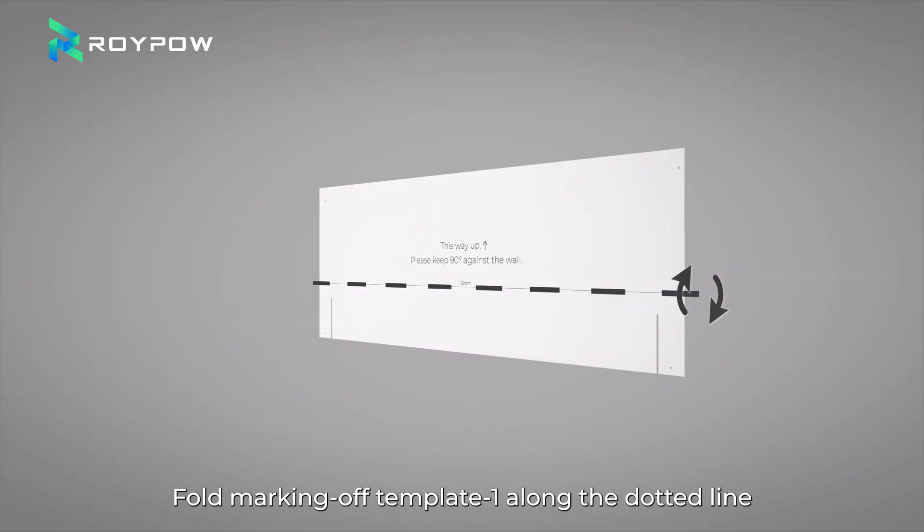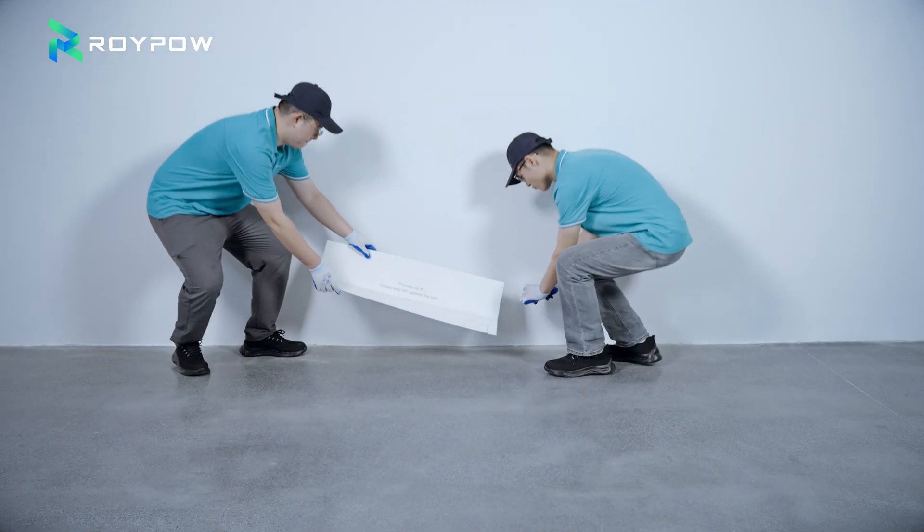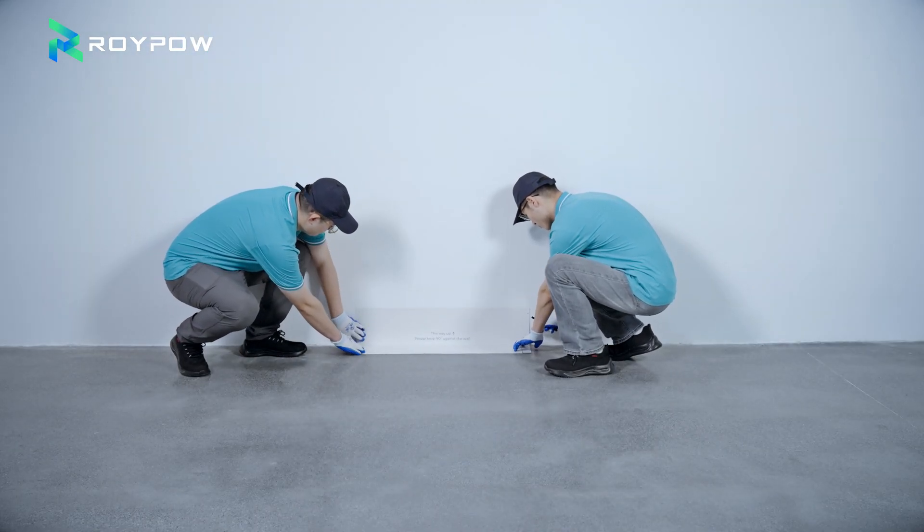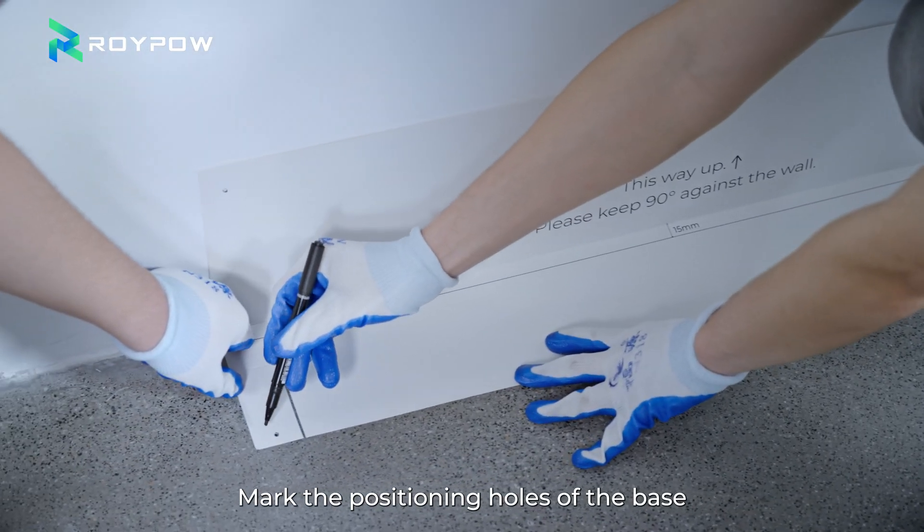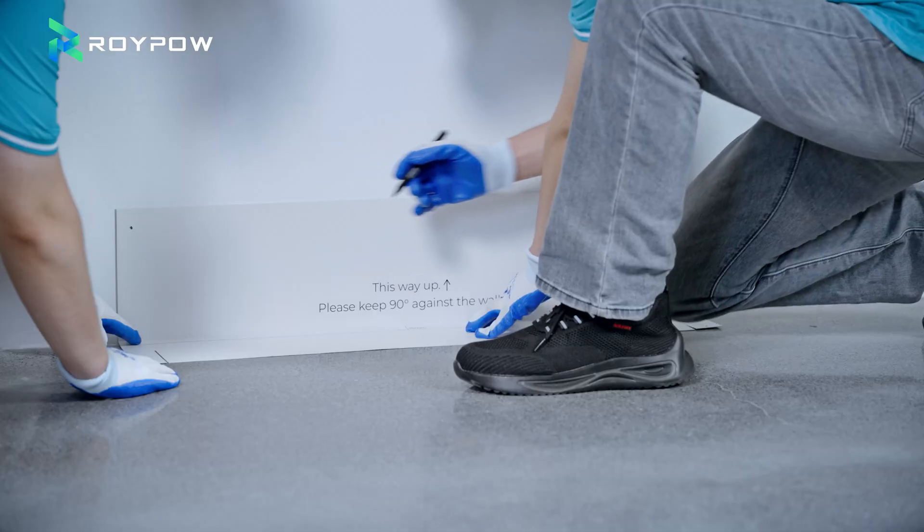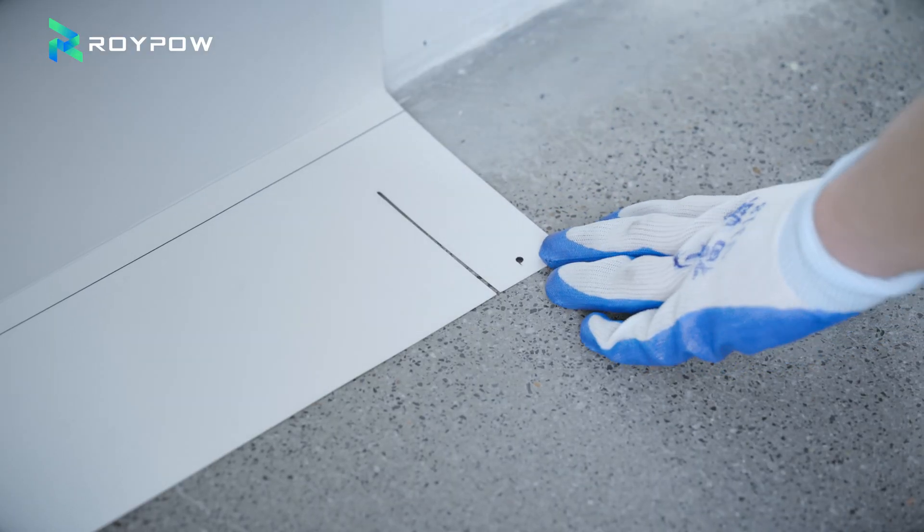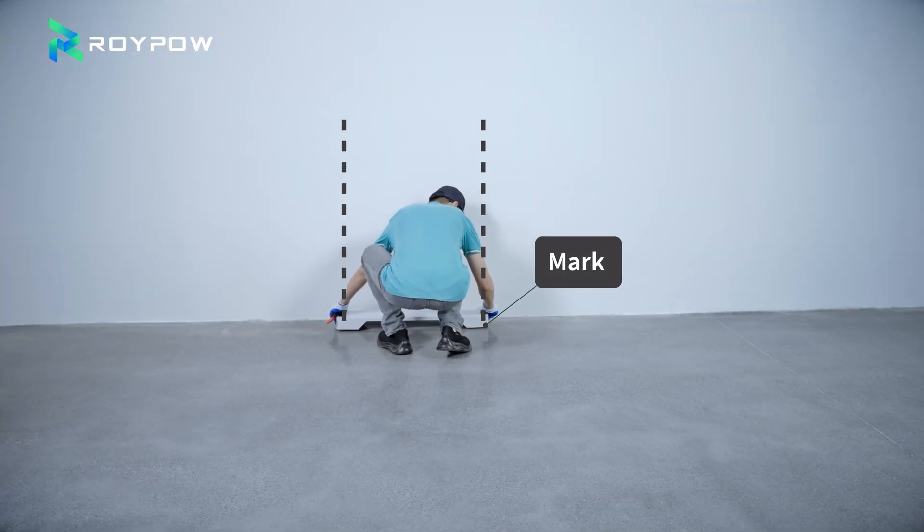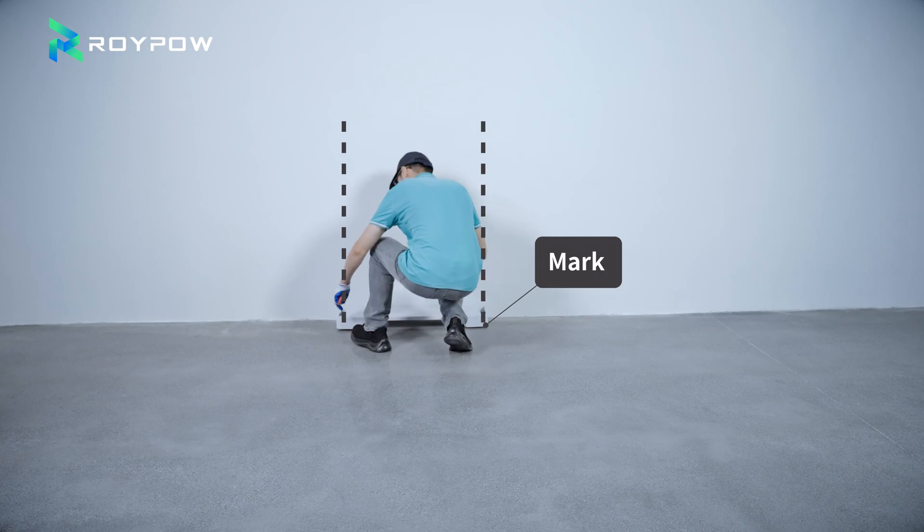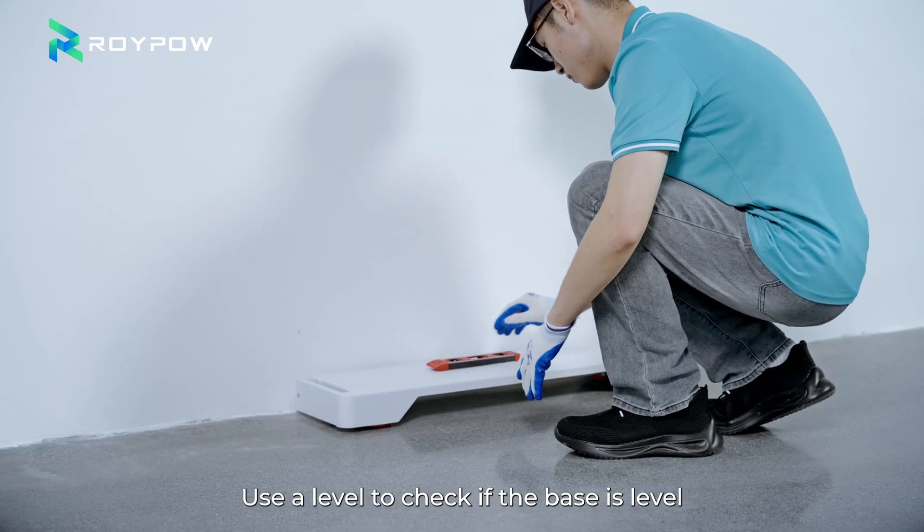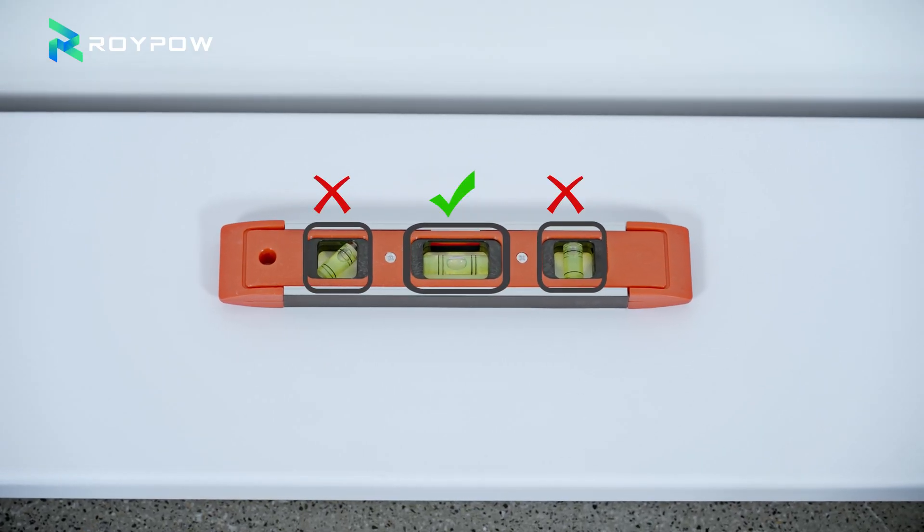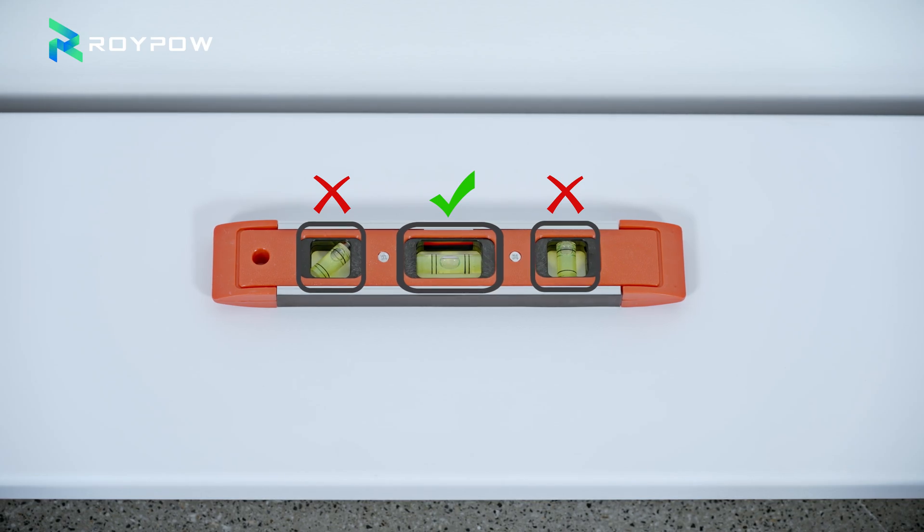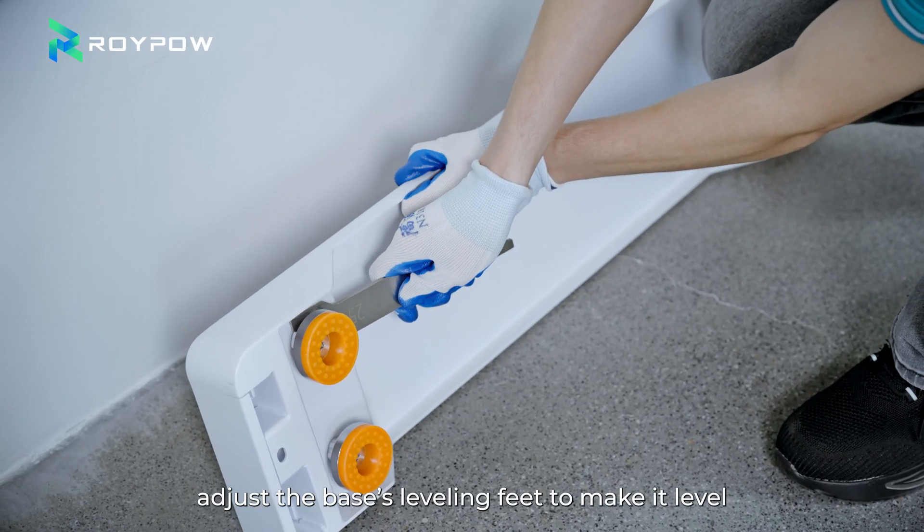Fold marking off template one along the dotted line and place it on the ground. Mark the positioning holes of the base. Align them and place the base. Use a level to check if the base is level. If not, adjust the base's leveling feet to make it level.